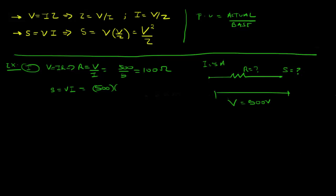Using the traditional method: R = V/I = 500/5 = 100 ohms, and S = V × I = 500 × 5 = 2500 volt-amps, or 2.5 kVA. For a simple circuit like this the traditional method works fine, but power system analysis involves much more complex systems — that is where per unit quantities come in handy.